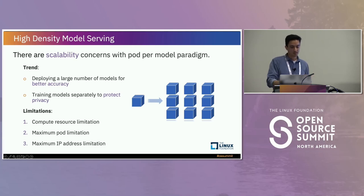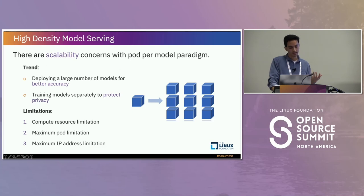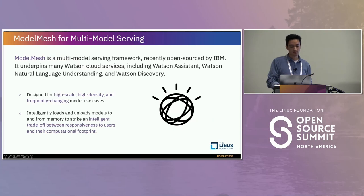Protecting privacy has to do with separating data and training models by isolating data. Where I used to work at the grocery company, they wanted models at the user level — in order to protect privacy between user data, you isolate and train models on just that particular type of data. But on this pod-per-model paradigm, you start to think about limitations: compute resource limitations, the maximum pod limitation, Kubernetes best practices when you start thinking about thousands of models — that means thousands of pods — and IP address limitations because each pod needs to be assigned one. The answer to these limitations is where ModelMesh comes in.